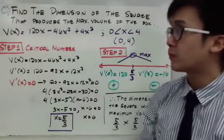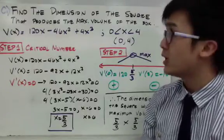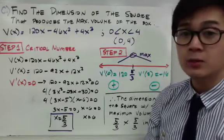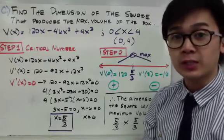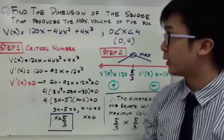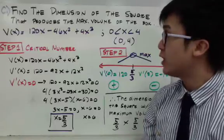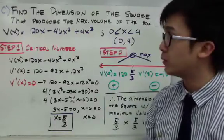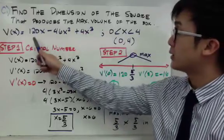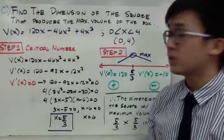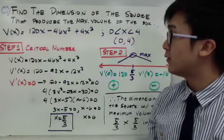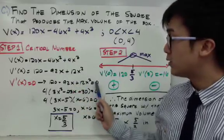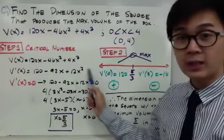To answer the last problem, we use derivatives to find the dimension of the square that produces the maximum volume. In an optimization problem, we always maximize or minimize a function — here we're finding the maximum volume. The first step is to find the critical numbers from the volume function 120x minus 46x squared plus 4x cubed. Taking the first derivative gives 120 minus 92x plus 12x squared, which we then set equal to zero, yielding a quadratic equation.